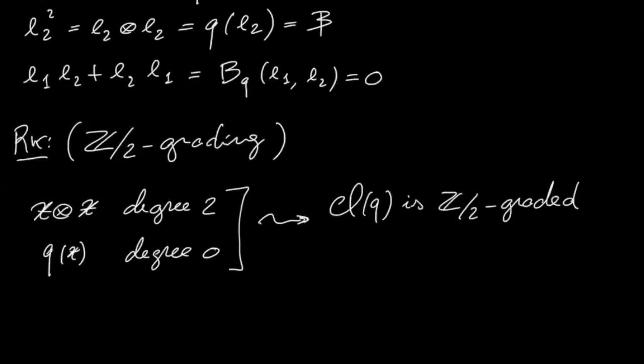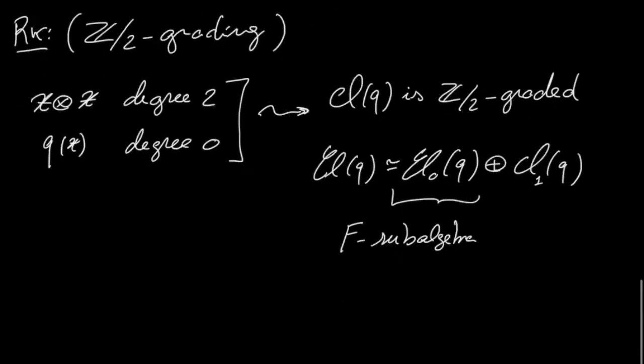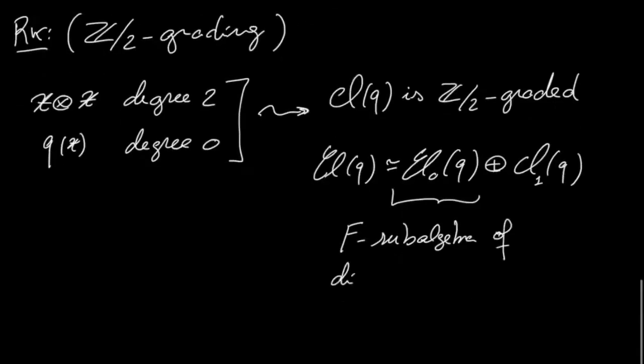And so we know that it's actually a decomposition like this with a zero part and one part where the zero part is in fact an F subalgebra, and it turns out that the dimension of this subalgebra is 2 to the power d minus 1. So it's half of the dimension of the Clifford algebra.